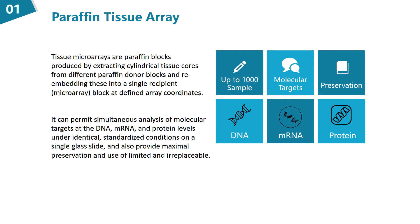Tissue microarrays are paraffin blocks produced by extracting cylindrical tissue cores from different paraffin donor blocks and re-embedding these into a single recipient microarray block at defined array coordinates. They can permit simultaneous analysis of molecular targets at the DNA, mRNA, and protein levels under identical, standardized conditions on a single glass slide, and also provide maximal preservation and use of limited and irreplaceable archival tissue samples.